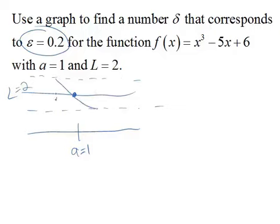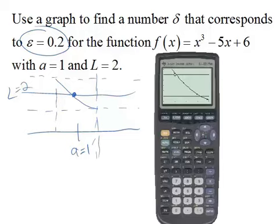What we're interested in is finding these values so that we stay within epsilon of our limit. So we need to find out what the x value is here and what the x value is right here.